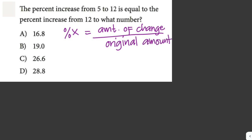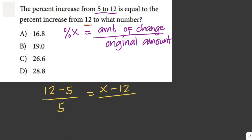Since we are not actually asked for the percentage, we can set this up as a proportion. The percent increase is 12 minus 5 over 5, because 5 is the original amount. This equals the percent increase from 12 to what number. We don't know the number, so let's call it x: that is x minus 12 over 12, because the original number here is 12.